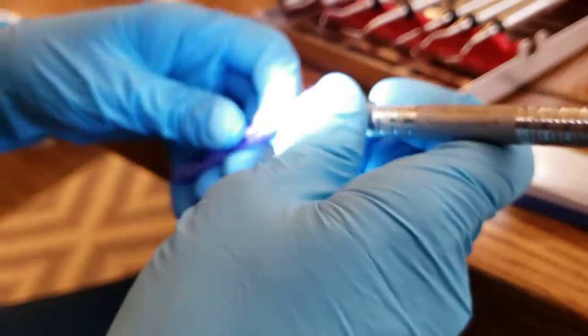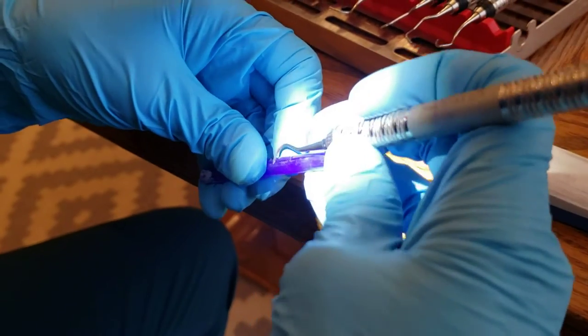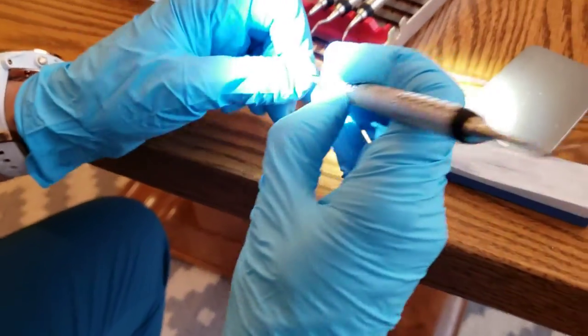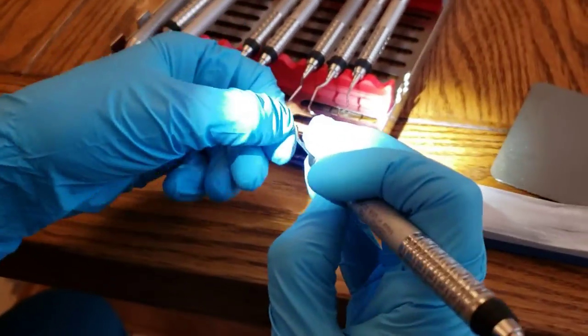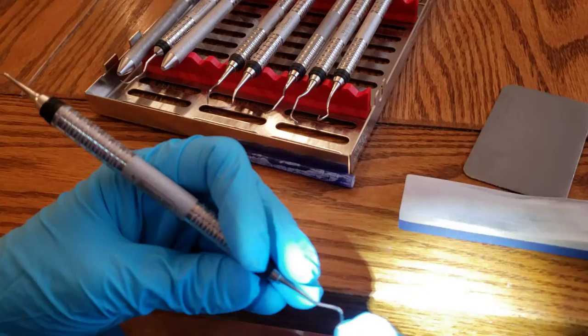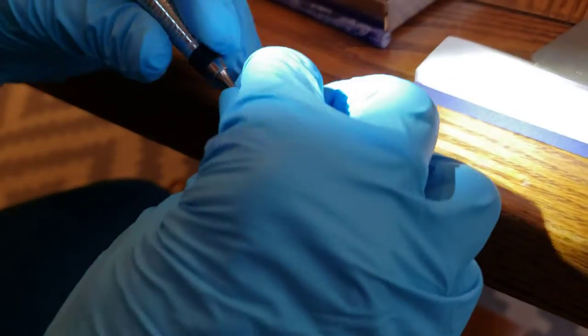And then we can check it, and it grabs right along. So that is your 6-7. That's an anterior sickle scaler. I'm going to do another universal, which this is a 204S. Some people, you may not be familiar with the 204S. It's kind of, you would sharpen it the same way as like your Barnhart. But it is a sickle. So we are going to go off the end instead of around the edge, like I'll show you on a curette.